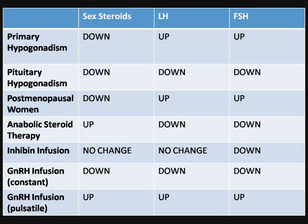To summarize: GnRH is pulsatile, which prevents down-regulation and maintains chronically high levels of both LH and FSH. These are the pathologies relating sex hormones in men. Importantly, whenever it involves infusion — whether anabolic steroid therapy, inhibin infusion, or GnRH constant infusion — there will always be a decrease in FSH. Remember, the common thread across all three is that FSH levels decrease.